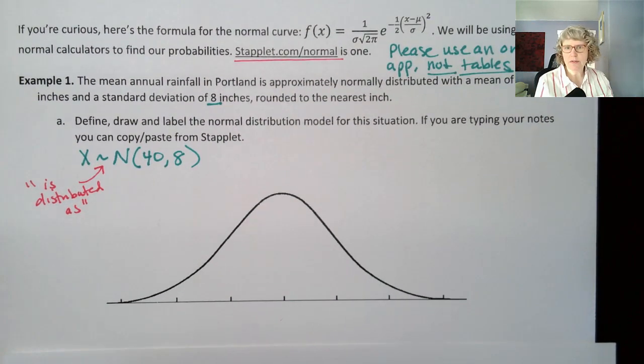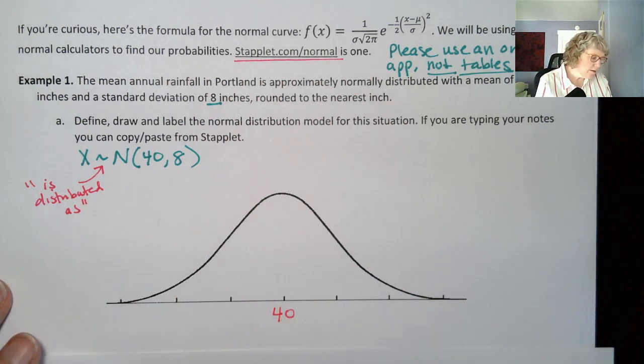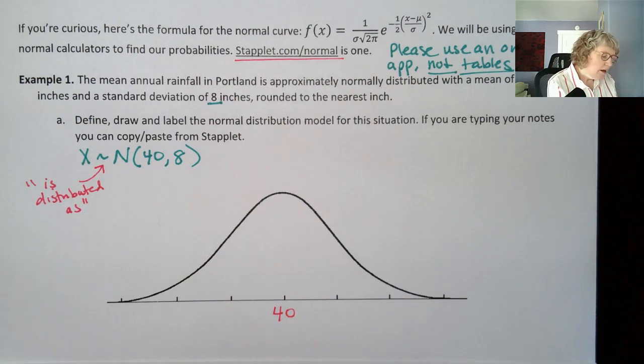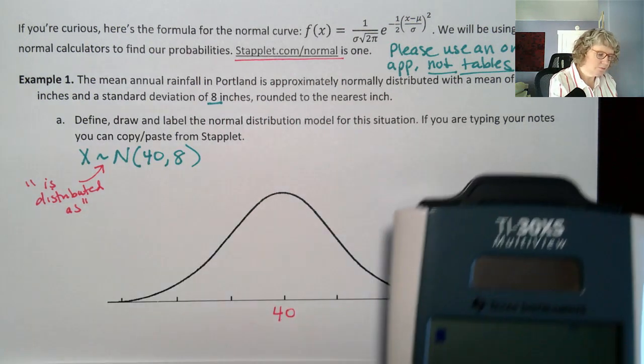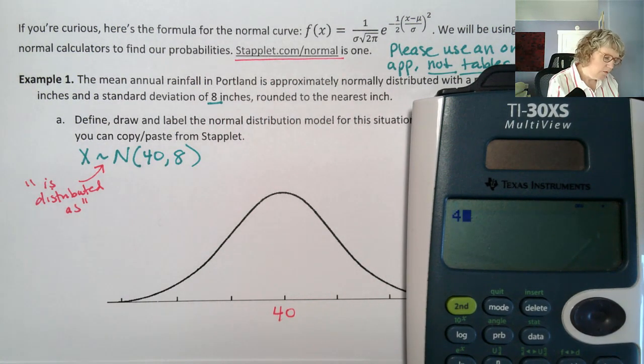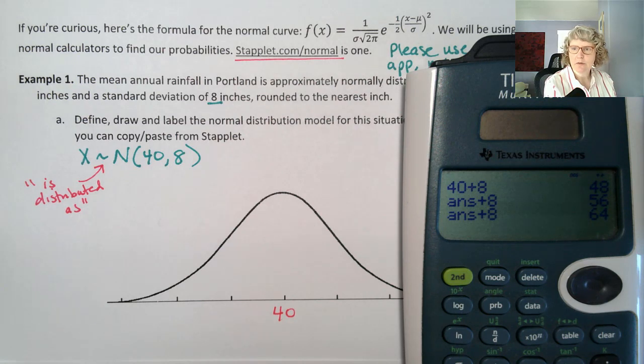We always have the mean in the middle because it's symmetric. So I'm going to put my 40 in the center. And then on this normal curve that I have preprinted, I have the mean in the middle and then one, two, three little tick marks on the axis going to the right, and one, two, three going to the left. So I'm going to label and then we use our standard deviation as our scale. I'm going to add eight each time and then subtract eight each time.